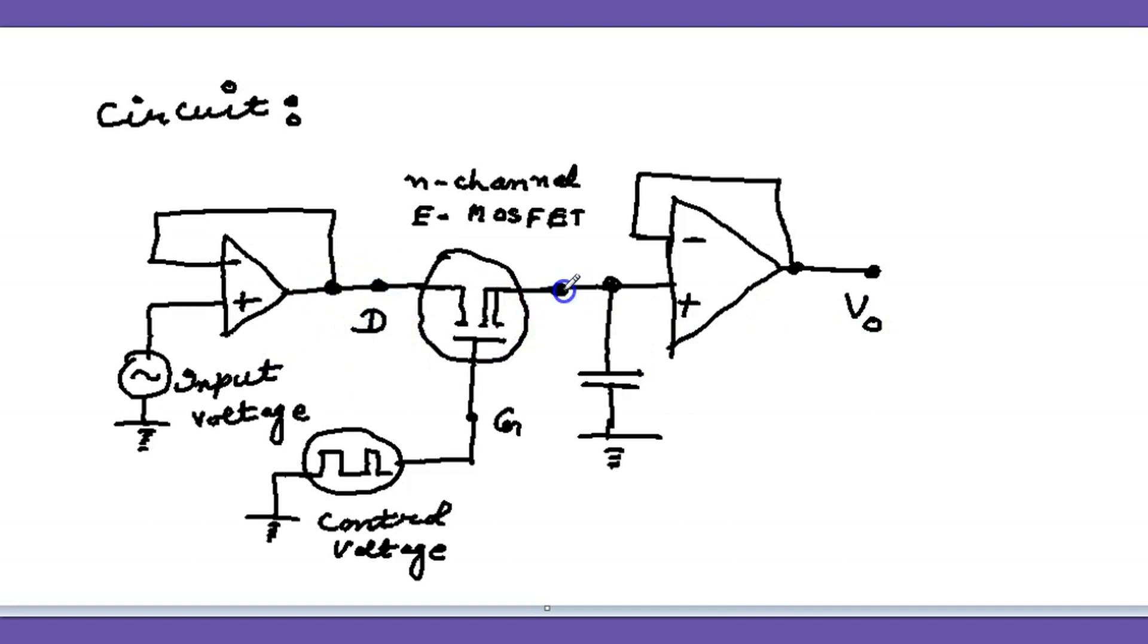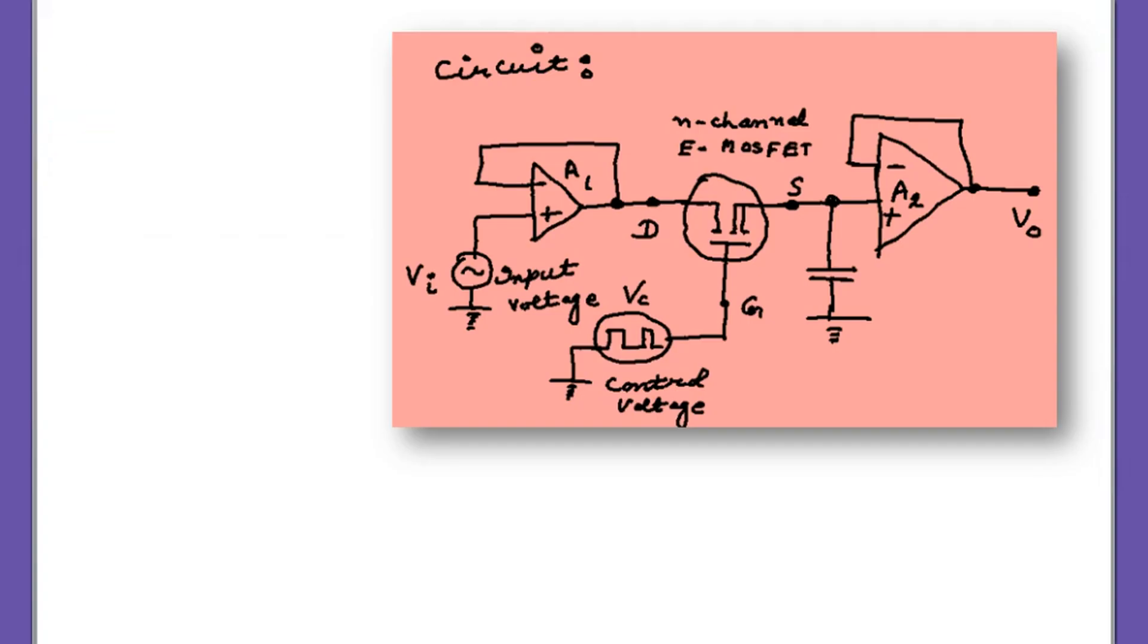Now this is drain, this is source. So we have the control voltage, input voltage. This is the first op, and this one is the second operational amplifier acting as a voltage follower. We are using N-channel enhancement mode MOSFET which works as a switch.